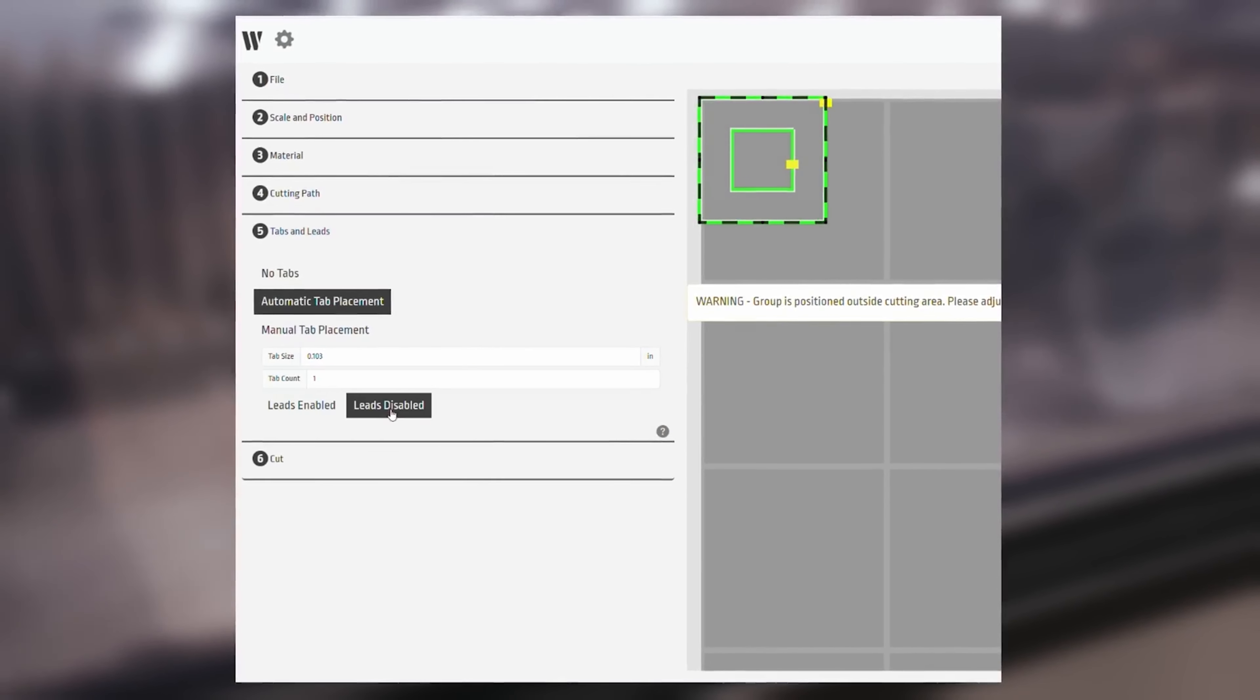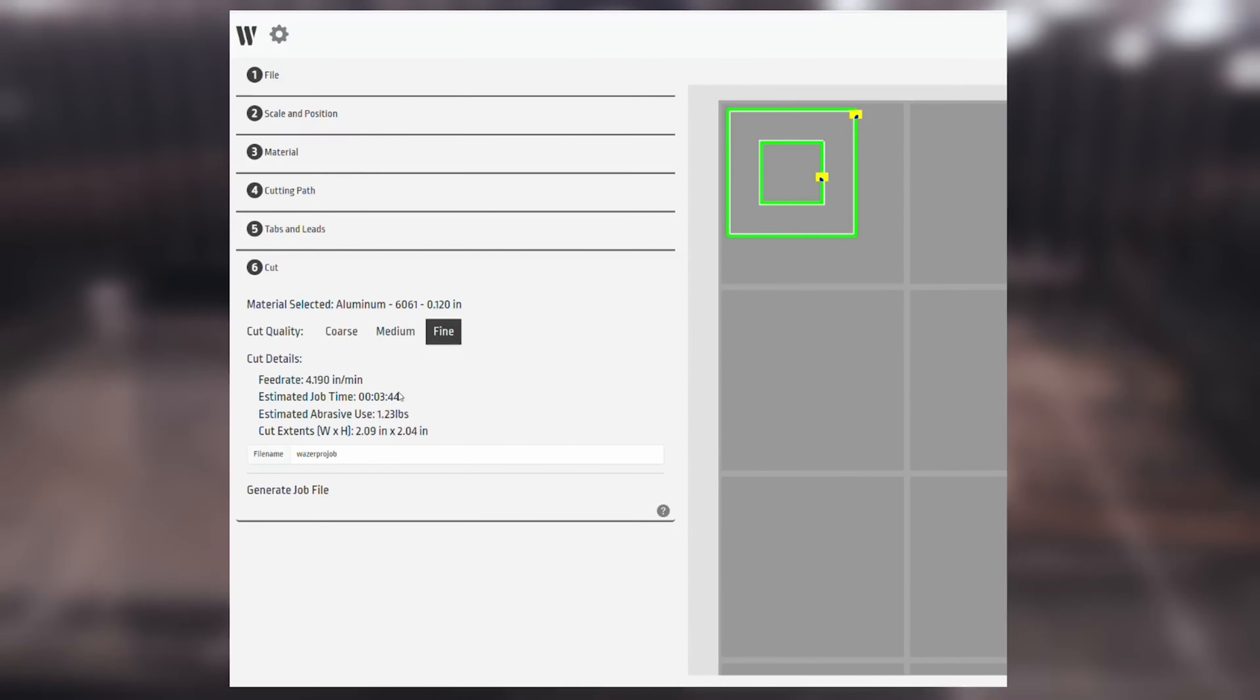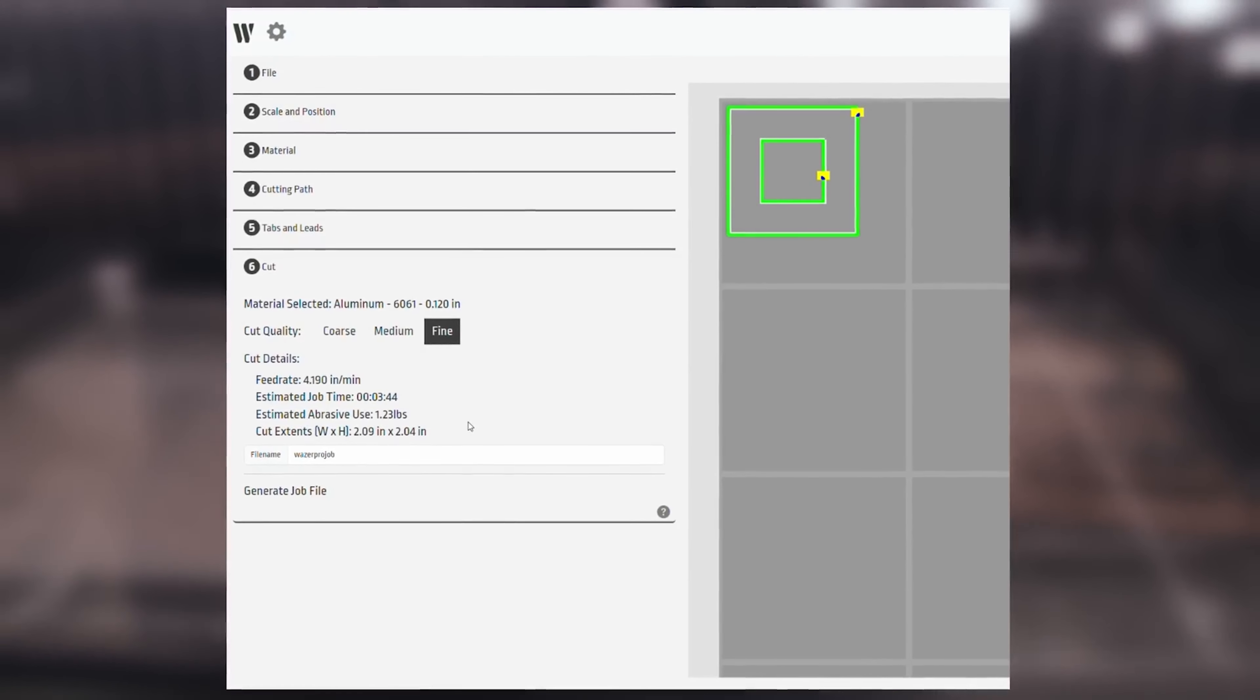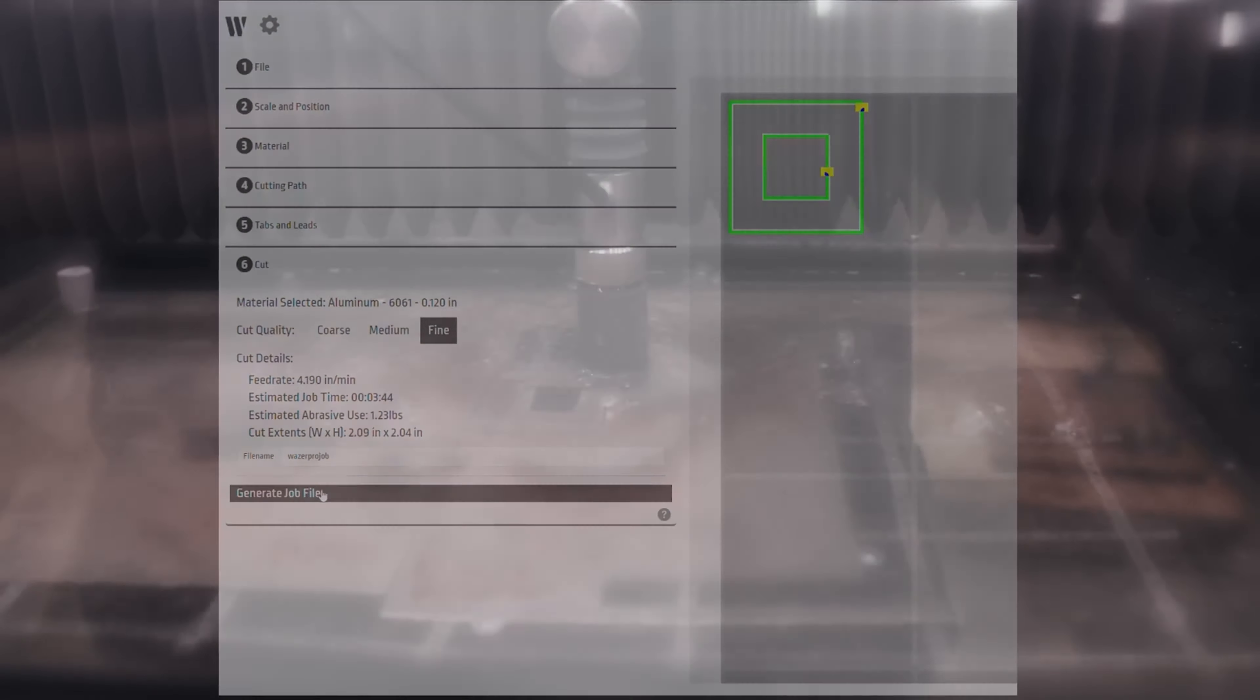Then we can select our cut quality. And this is how nice the cut edge looks. And then once we select that it will tell us how long it's gonna take and estimate how much garnet it's gonna use. And then from there we save it and bring it to the machine.